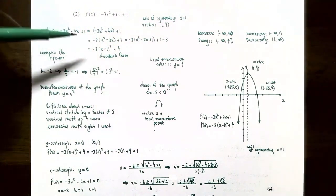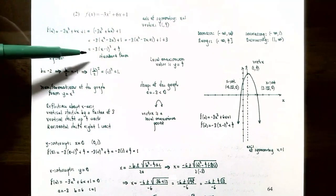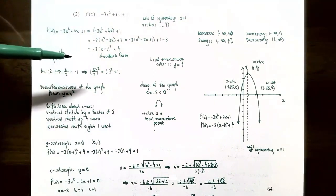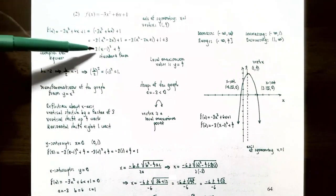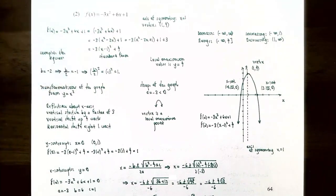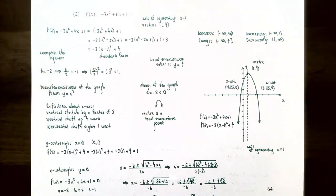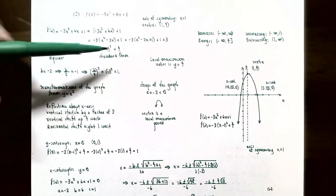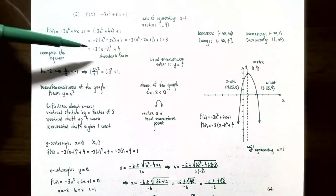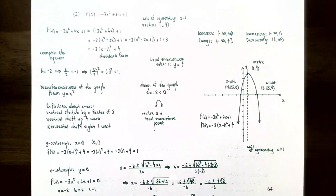The transformations from y = x² are: the negative sign gives a reflection across the x-axis; the factor of 3 gives a vertical stretch by a factor of 3; the +4 outside gives a vertical shift up 4 units; and x − 1 inside the parentheses gives a horizontal shift right 1 unit.